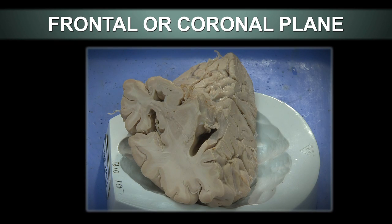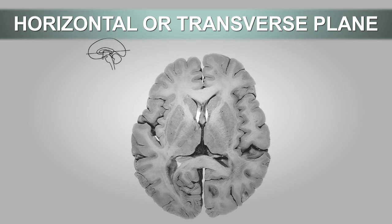If the brain is cut and divided into anterior and posterior parts, that is the frontal or coronal plane. Lastly, a plane that divides the brain into upper or superior and lower or inferior regions is the horizontal or transverse plane.